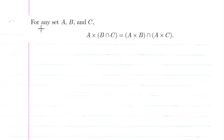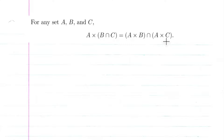We're going to prove that for any sets A, B, and C, A cross (B intersection C) is equal to (A cross B) intersection (A cross C).